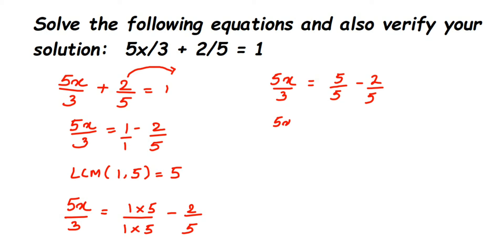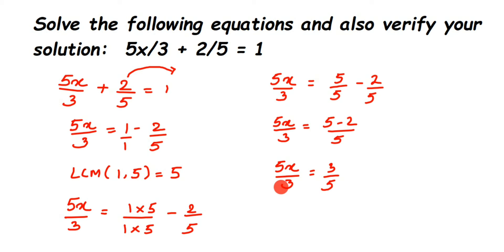Now we have the same denominator, so we subtract the numerators: 5x upon 3 equals 5 minus 2 upon 5, which gives 3 upon 5. So 5x upon 3 is equal to 3 upon 5. We want only the x value, but we have 5 and 3 here. We have to transpose them to the other side. The 5 is in multiplication with x, so when transposed it goes to division.